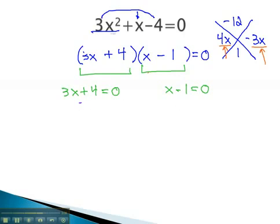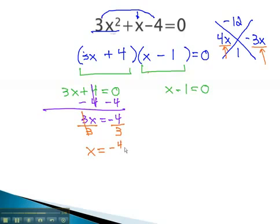We can solve by subtracting 4 from the first equation, giving us 3x equals negative 4. Finally, dividing by 3, the first factor is 0 when x is negative 4 thirds.